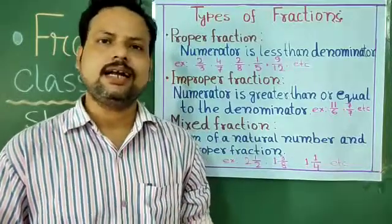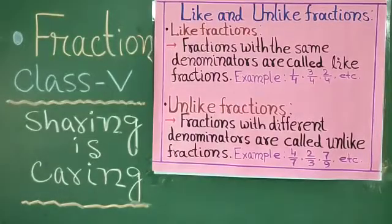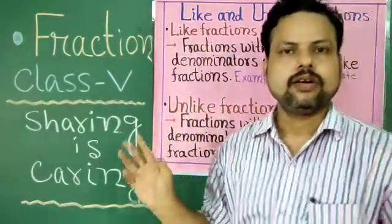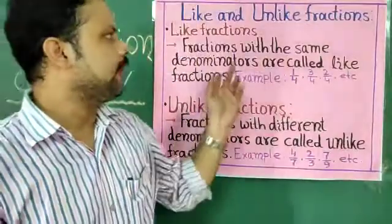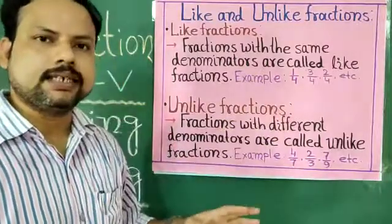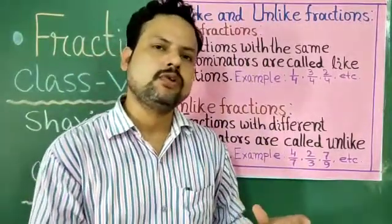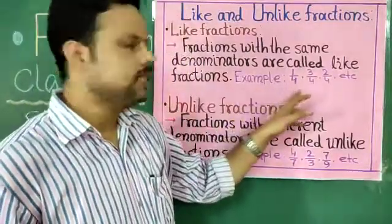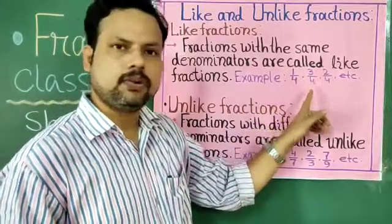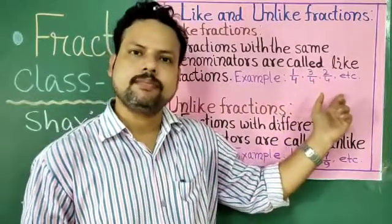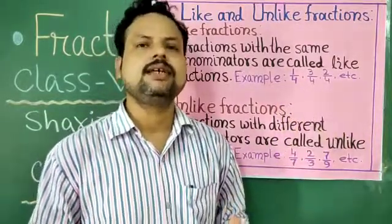Now I will explain like and unlike fractions. In like fractions, fractions with the same denominators are called like fractions. There may be 2, 3, or 4 fractions, but their denominators remain the same. Examples: 1 by 4, 3 by 4, 2 by 4 — everywhere the denominator is the same. So this type of fraction is known as like fraction.